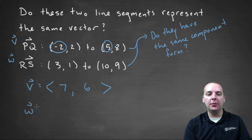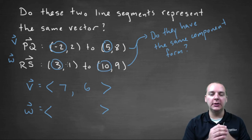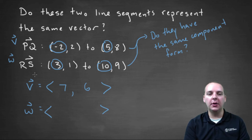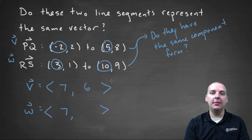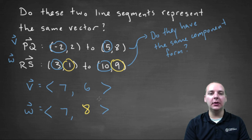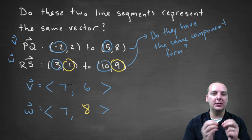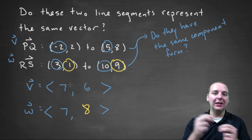Now let's do the same for vector W — again, terminal minus initial. For the first component, ten minus three is seven, so this is looking promising. For the second component, nine minus one gives us eight, not six. So these vectors have a slightly different direction from each other, even though they're close, and they also have a slightly different length.